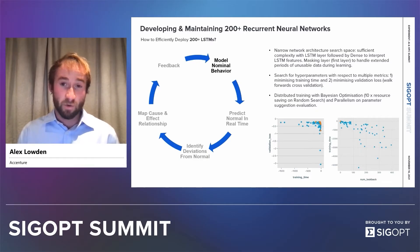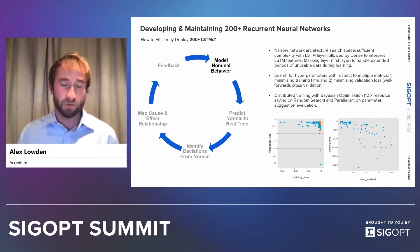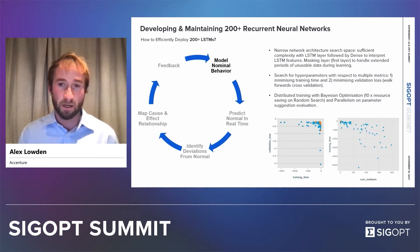The first is around really narrowing the architecture search space. Certain architectures of LSTM will lend themselves to certain sensor types, for example, vibrations or temperatures.